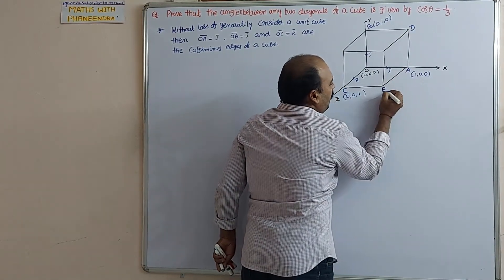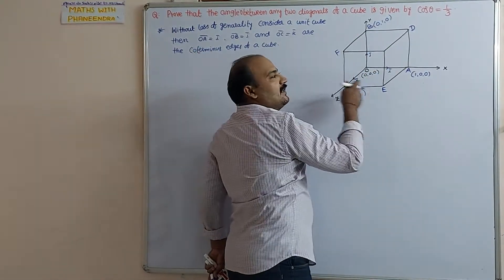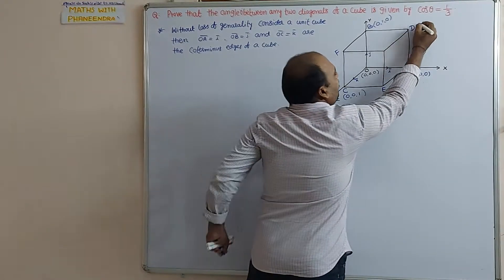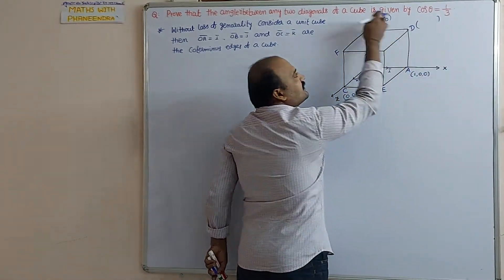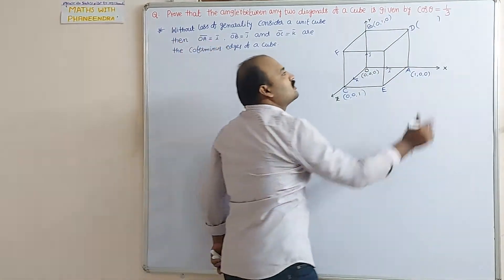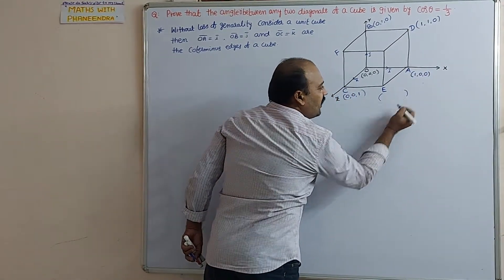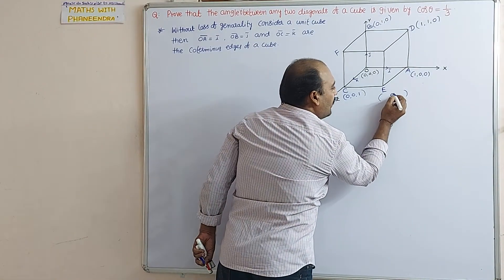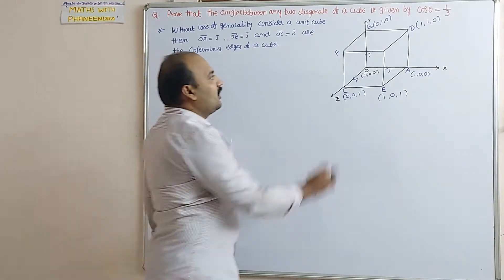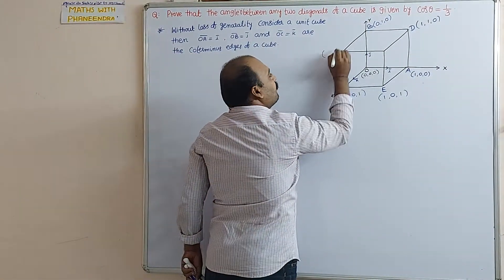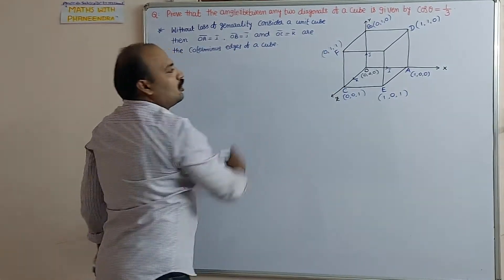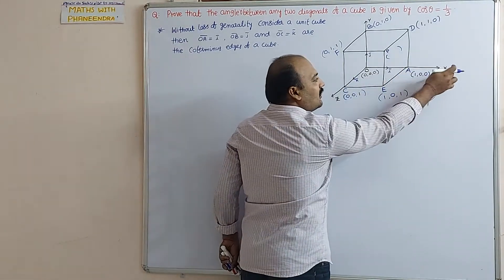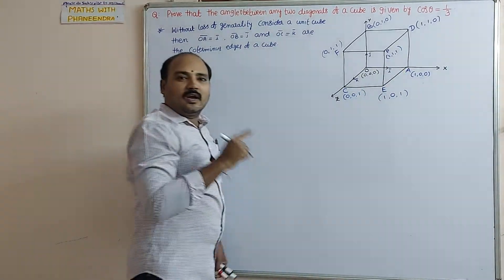The remaining points are D, E, and F. D lies in the xy-plane, so its z-coordinate is zero, giving coordinates (1, 1, 0). E belongs to the xz-plane, so its y-coordinate is zero, giving (1, 0, 1). F belongs to the yz-plane, so x is zero, giving (0, 1, 1). Point P lies in space along all axes, so its coordinates are (1, 1, 1).